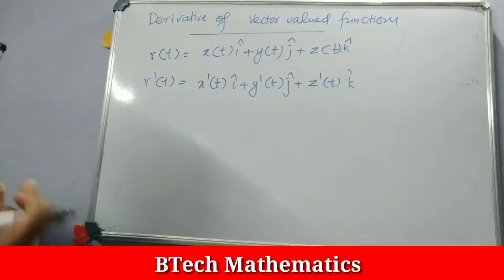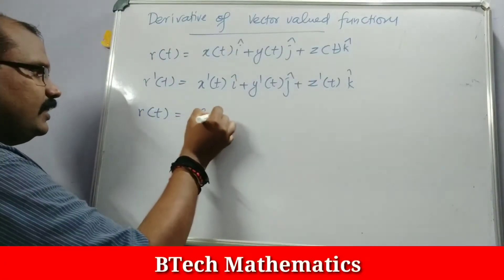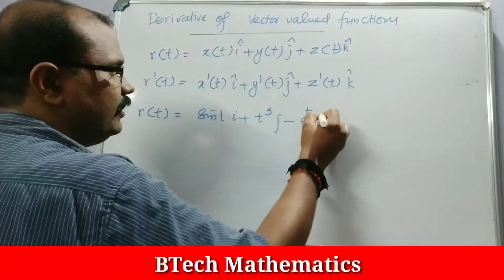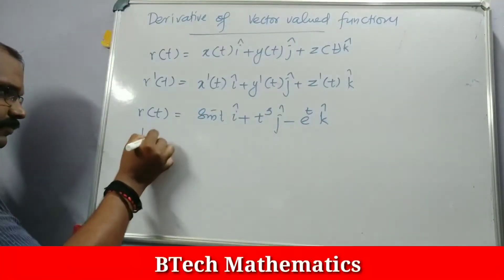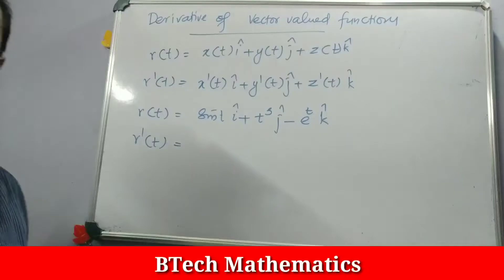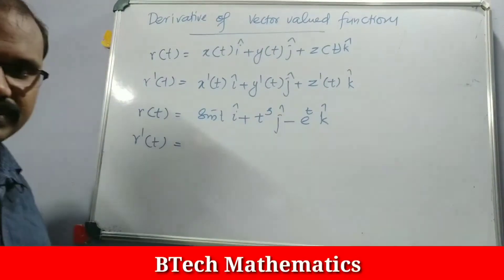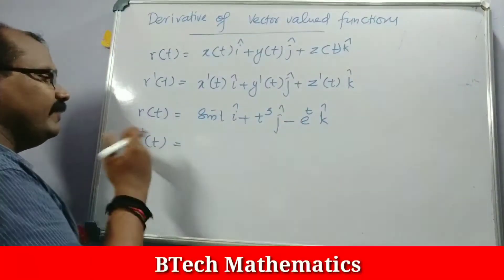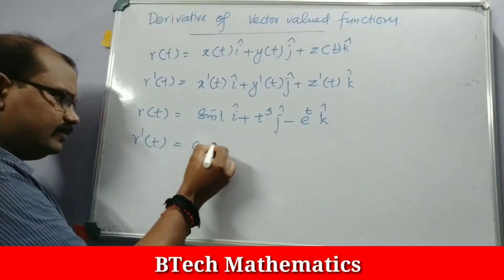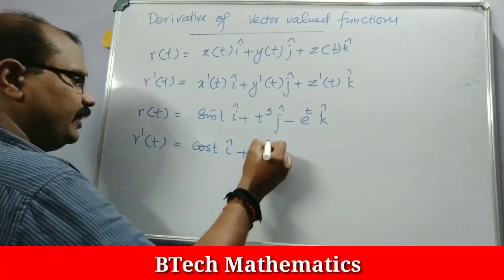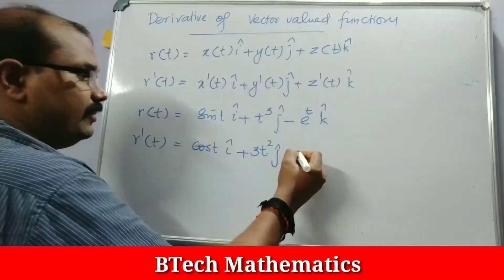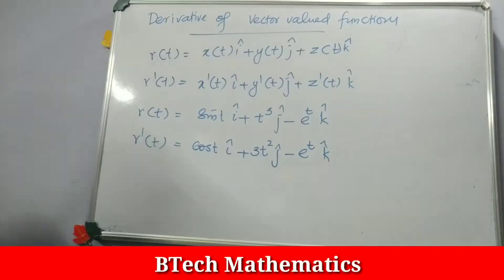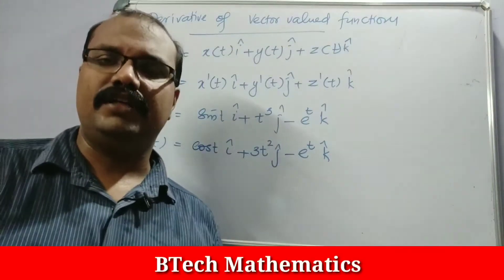For example, R of T equal to sin T i plus T cube j minus e raise to T k. Taking R dash of T, we differentiate component-wise: the derivative of sin T is cos T i, plus the derivative of T cube is 3T square j, minus e raise to T k. We component-wise differentiate and add.